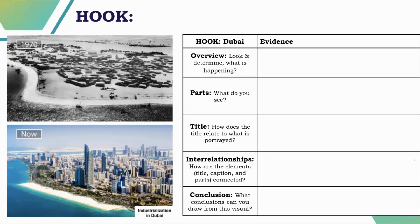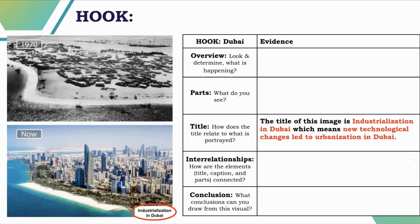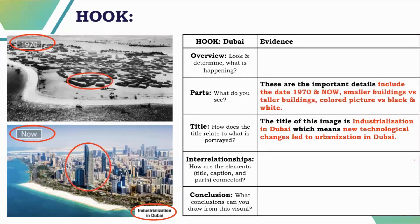In teacher mode, we start with the title — that's the first easy thing to pull out. Title: 'Industrialization in Dubai,' which simply means new technological changes led to urbanization in Dubai. Next, looking at the parts: I notice the dates — the image at the top says 1970, the image at the bottom says 'now.' The top image has smaller buildings, the bottom has taller buildings. The top image is black and white; the bottom is in color.